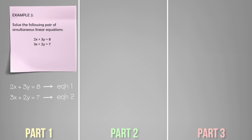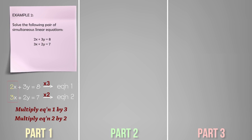In this example none of the coefficients are the same. To change this we need to multiply each equation by a suitable number. The lowest common multiple of 2 and 3 is 6. Therefore, if we multiply the first equation by 3 and the second equation by 2, the coefficients of x will be the same. Remember we have to multiply each term in the equation by that number. So we get 6x plus 9y equals 24, and 6x plus 4y equals 14.